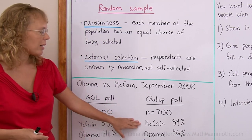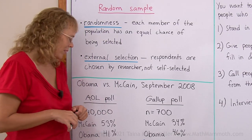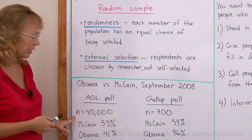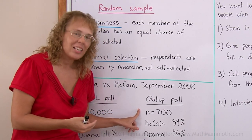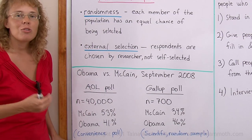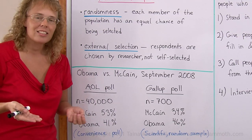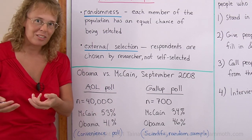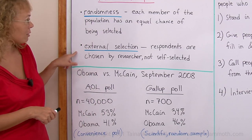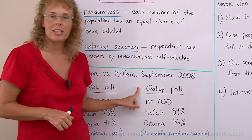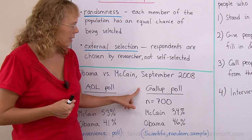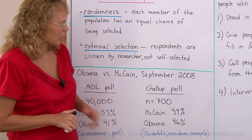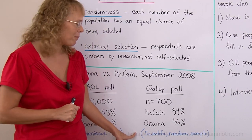The Gallup poll was done by phone. The sample size was 700 people. The results: McCain 34%, Obama 46%. It turns out that the Gallup poll is more accurate than the AOL poll, even though the AOL sample size is much larger. The reason is the method. The AOL poll is a convenience poll — people who came to the site could take it, making it a self-selection method. It does not fulfill the external selection requirement. The Gallup poll was done after a debate, calling people randomly and asking which candidate they thought did better. It was done with a scientific method using a real random sample.